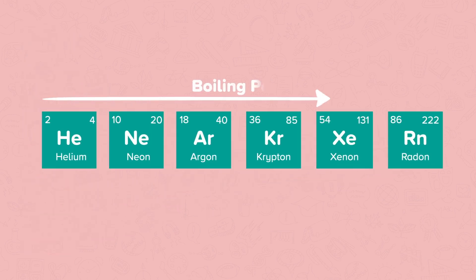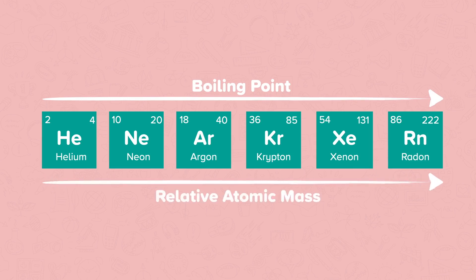The boiling point of noble gases increases as you move down the group. The relative atomic mass also increases as you go down the group.